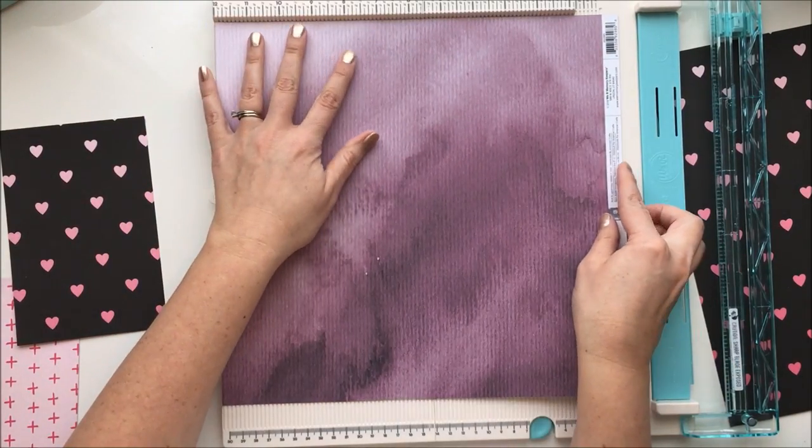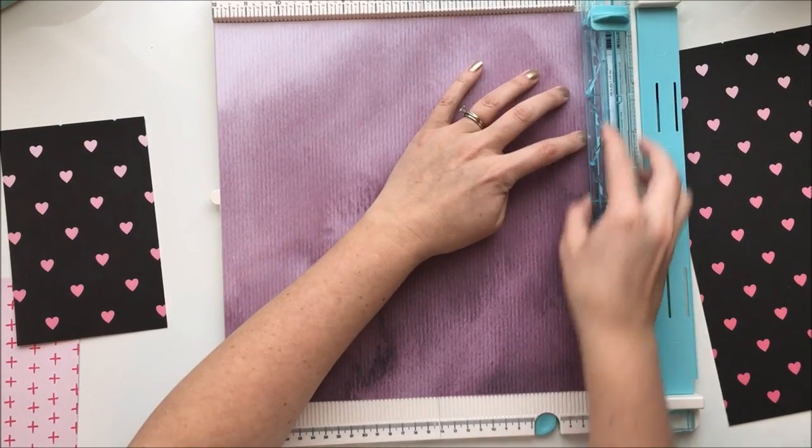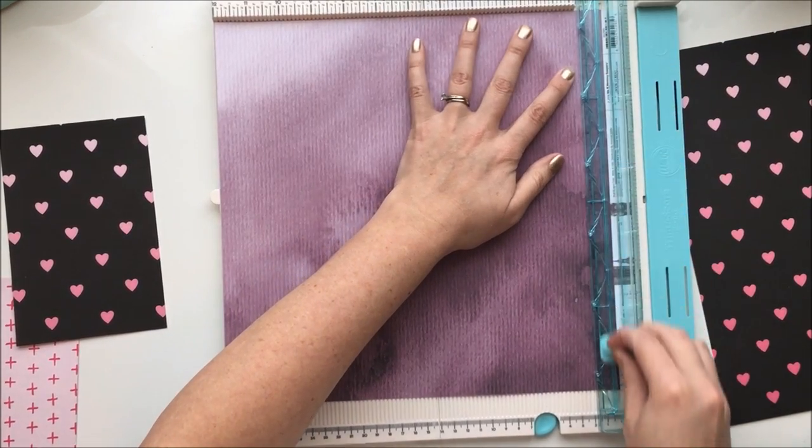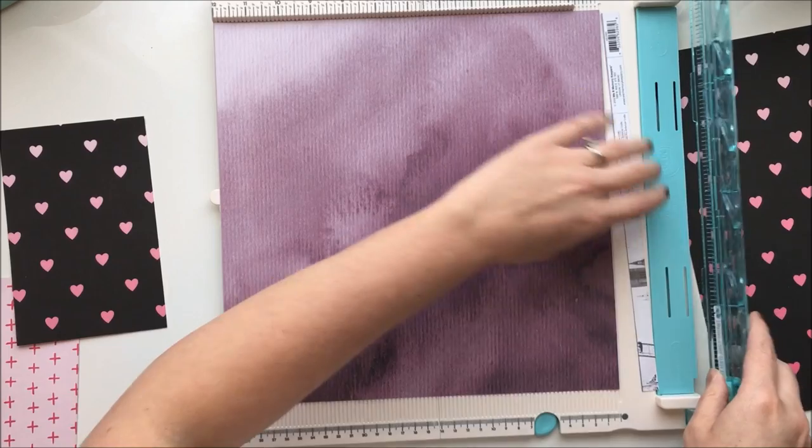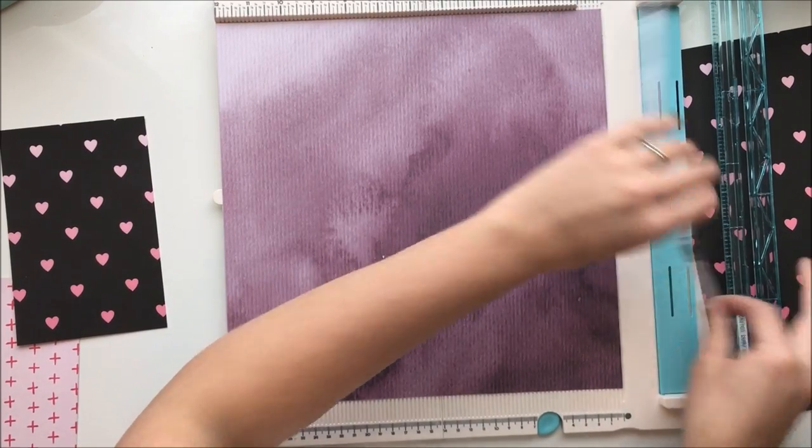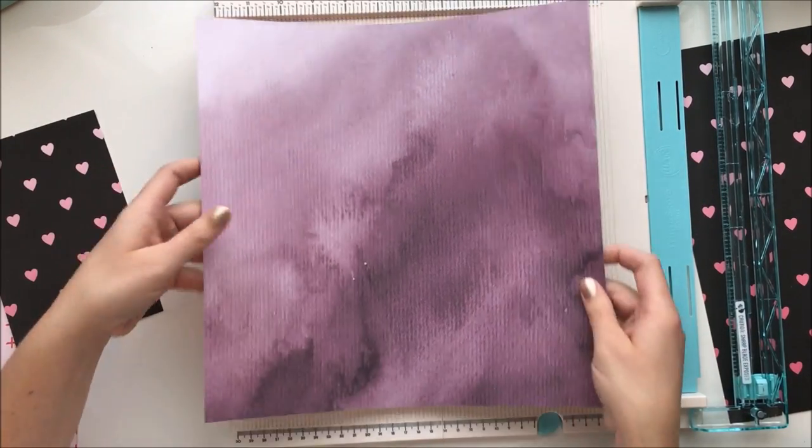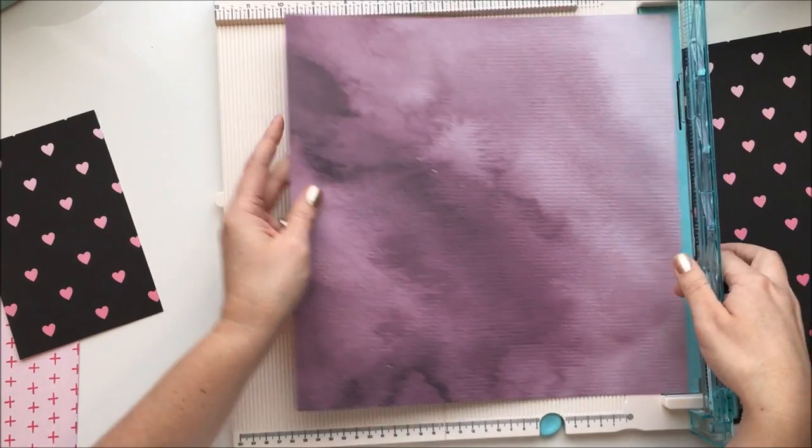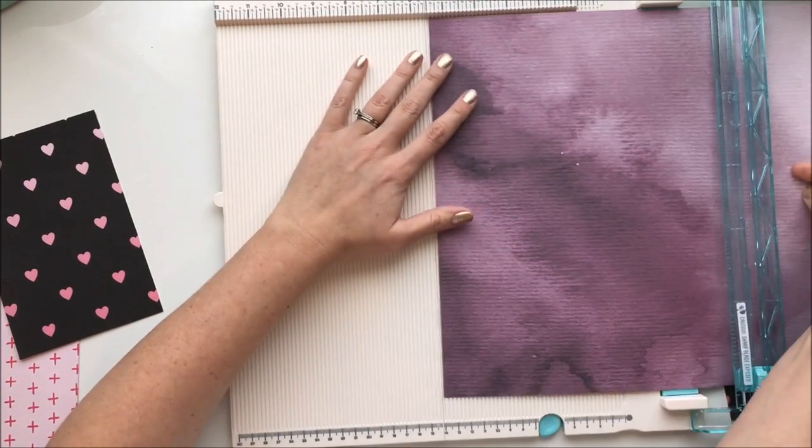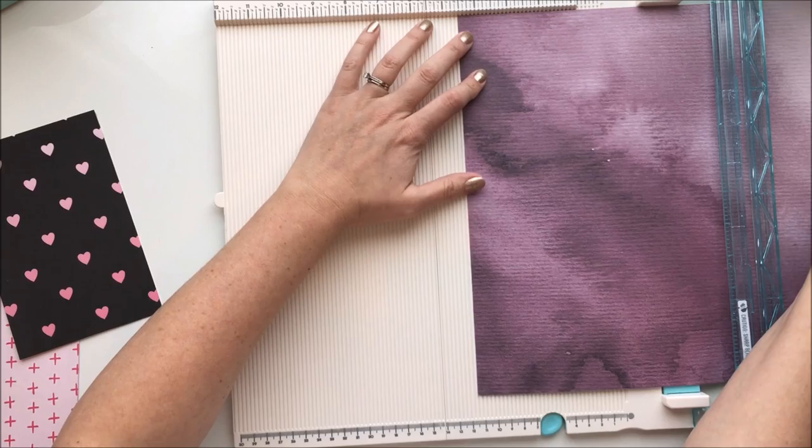I tend to be a little careless sometimes when I put my paper in and I end up with a diagonal cut because I let it slip after I put the bar down. So the magnetic clasp there really helps me keep things lined up nice and straight.